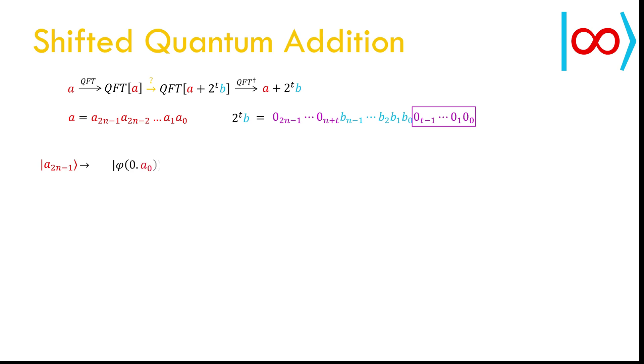As the last bit is 0 in 2 power t times b, the last bit of the Fourier transform is unaltered. Hence, we do nothing to this qubit. In fact, we do nothing to the first t qubits as they are all 0 in 2 power t times b.